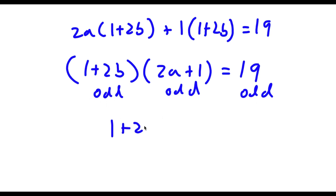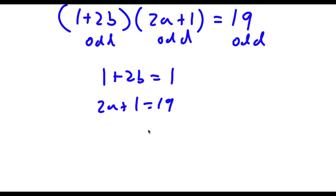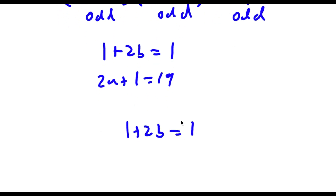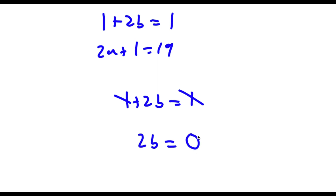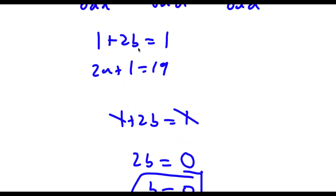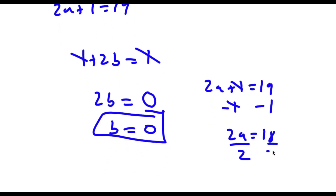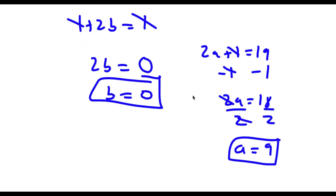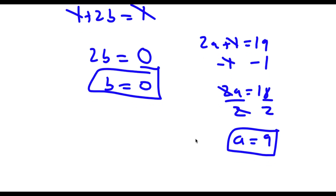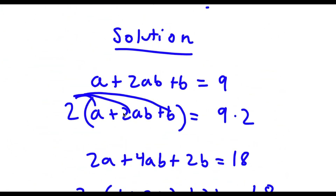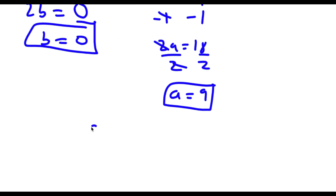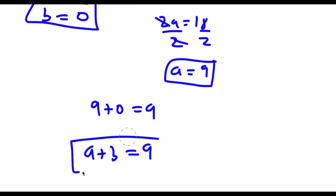So now, if I set 1 plus 2b equal to 1, then 2a plus 1 has to equal 19, because 1 times 19 is equal to 19. So if 1 plus 2b equals 1, subtracting 1 gives 2b equals 0, meaning b is equal to 0. And for 2a plus 1 equals 19, subtracting 1 from both sides gives 2a equals 18, and dividing by 2 gives a is equal to 9. So the value of b is 0 and the value of a is 9. Since b is 0 and a is 9, a plus b equals 9 plus 0, which is simply equal to 9. So a plus b is equal to 9.